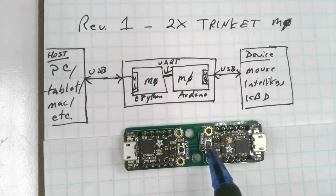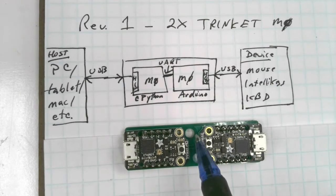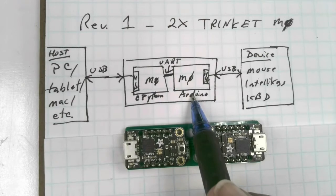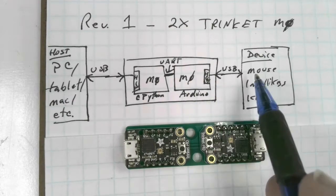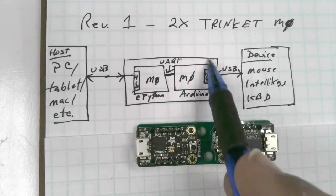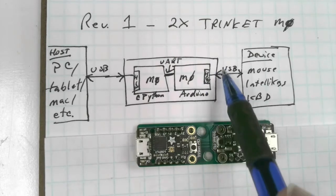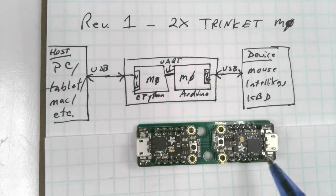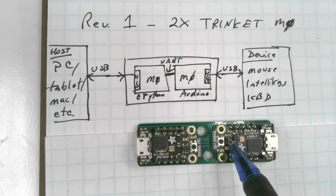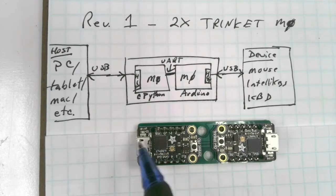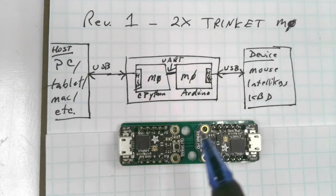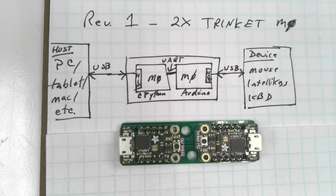It communicates between the two boards over these little wires you can see here through something called UART or just serial communication. And then this one is running Arduino because Arduino can be a USB host. So we plug in the IntelliKeys into this. This knows how to host an IntelliKeys interface. This guy constantly reads the IntelliKeys. This guy is constantly talking to the PC.